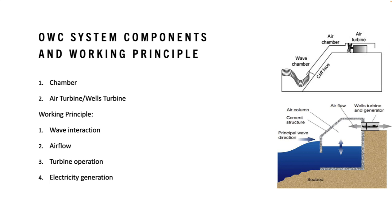The working principle of the OWC system begins with wave interaction. As ocean waves approach the shoreline, they enter the chamber through an opening at the bottom. The waves cause the water level inside the chamber to rise and fall, creating a fluctuation in water column height.